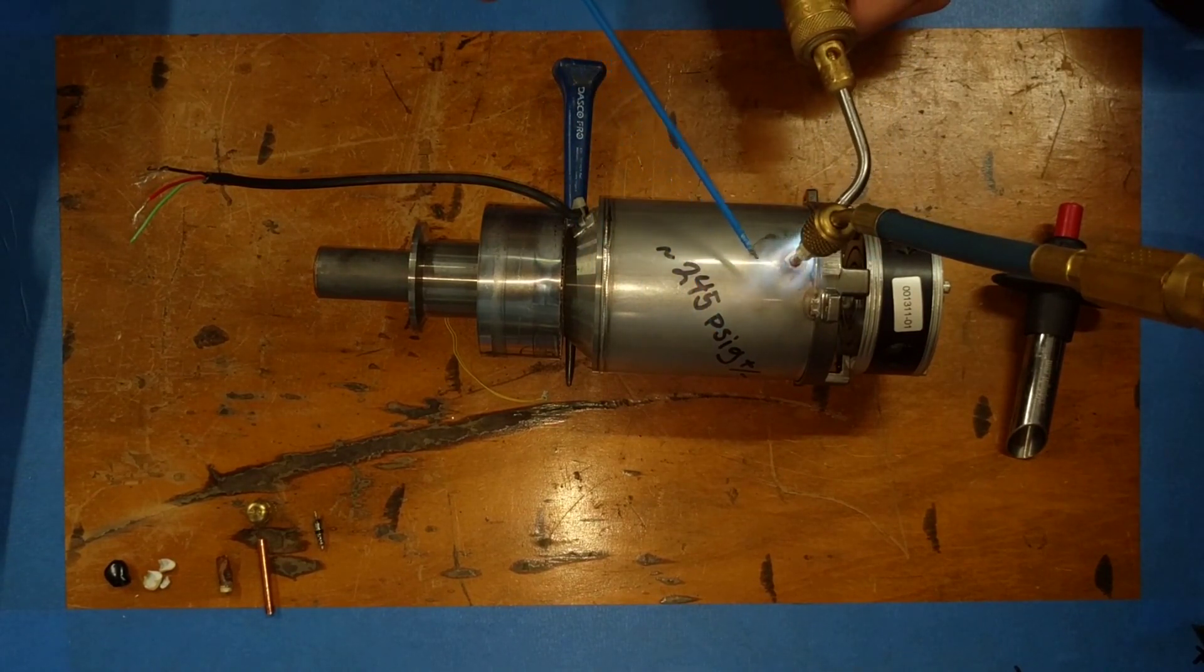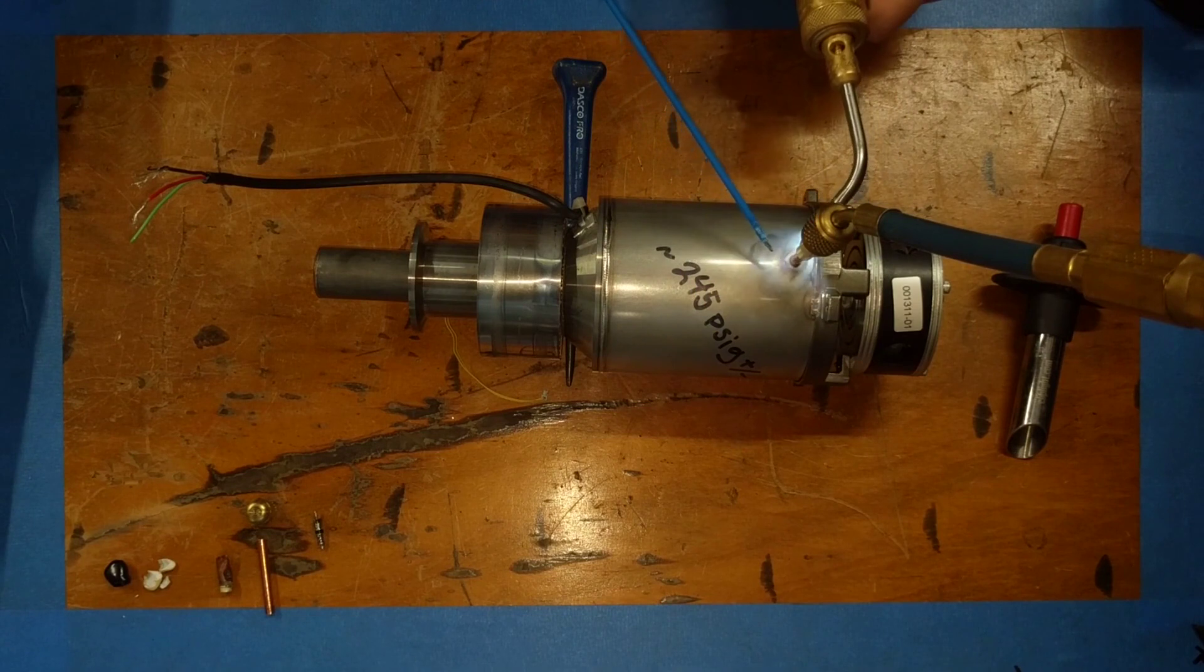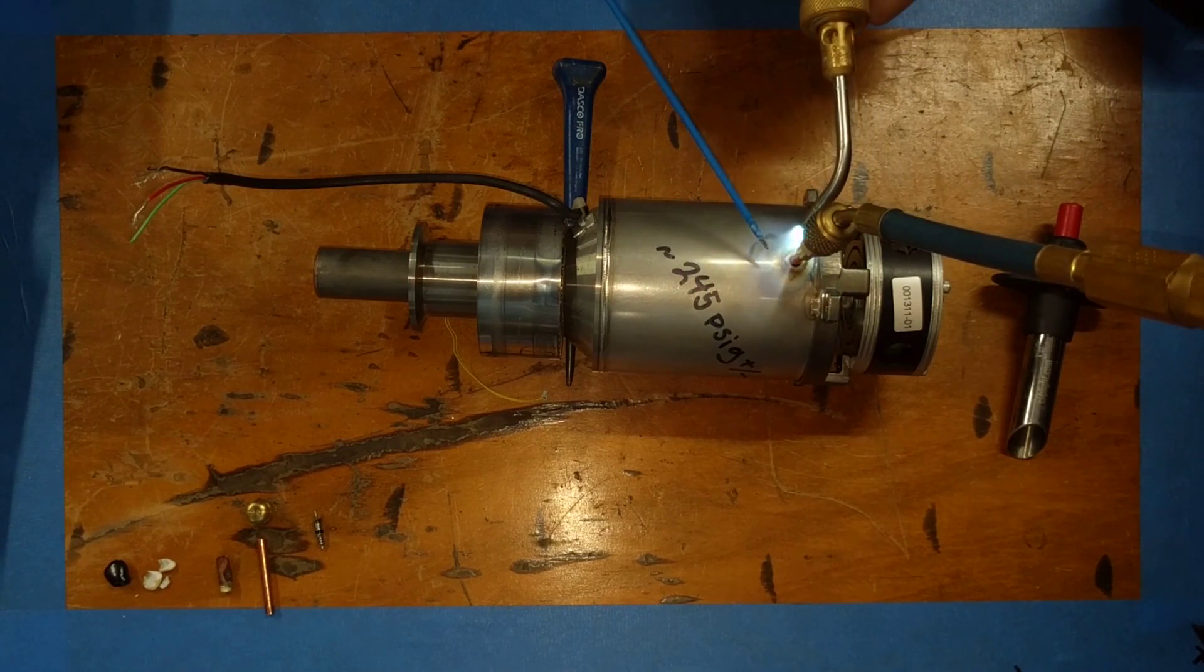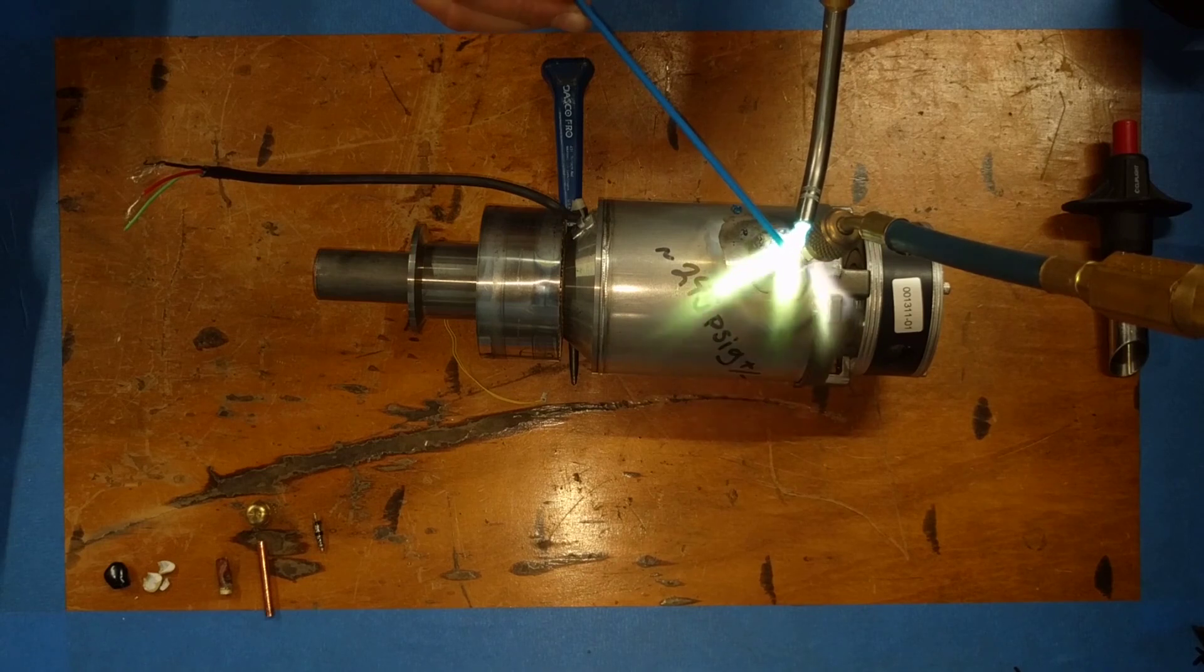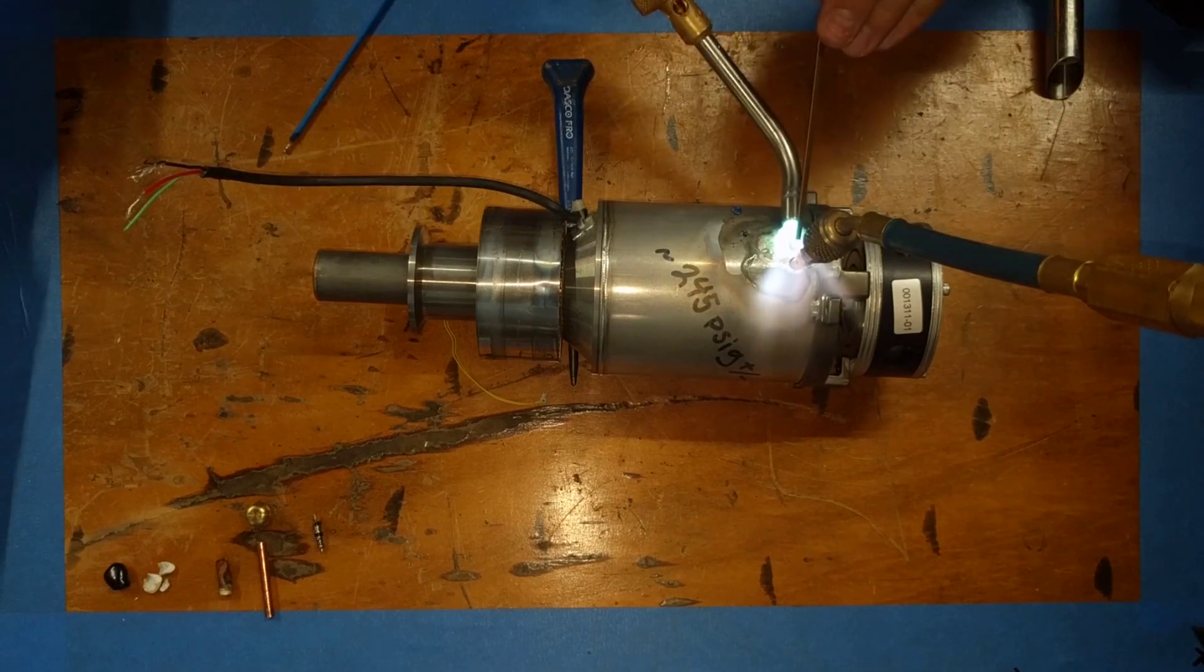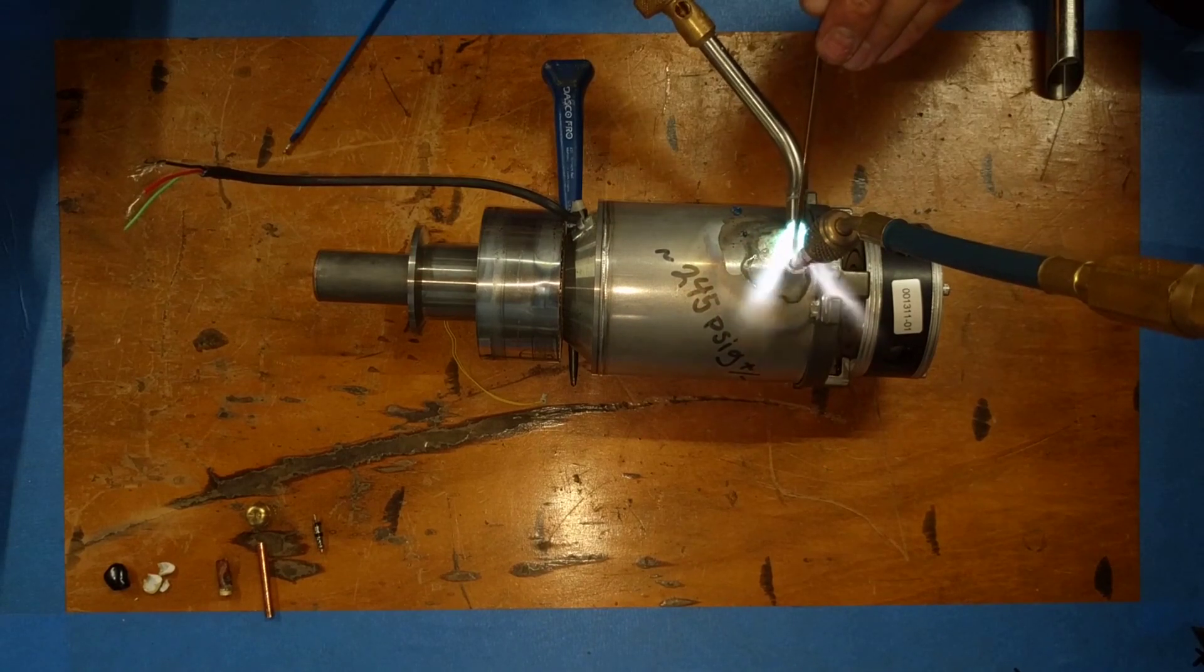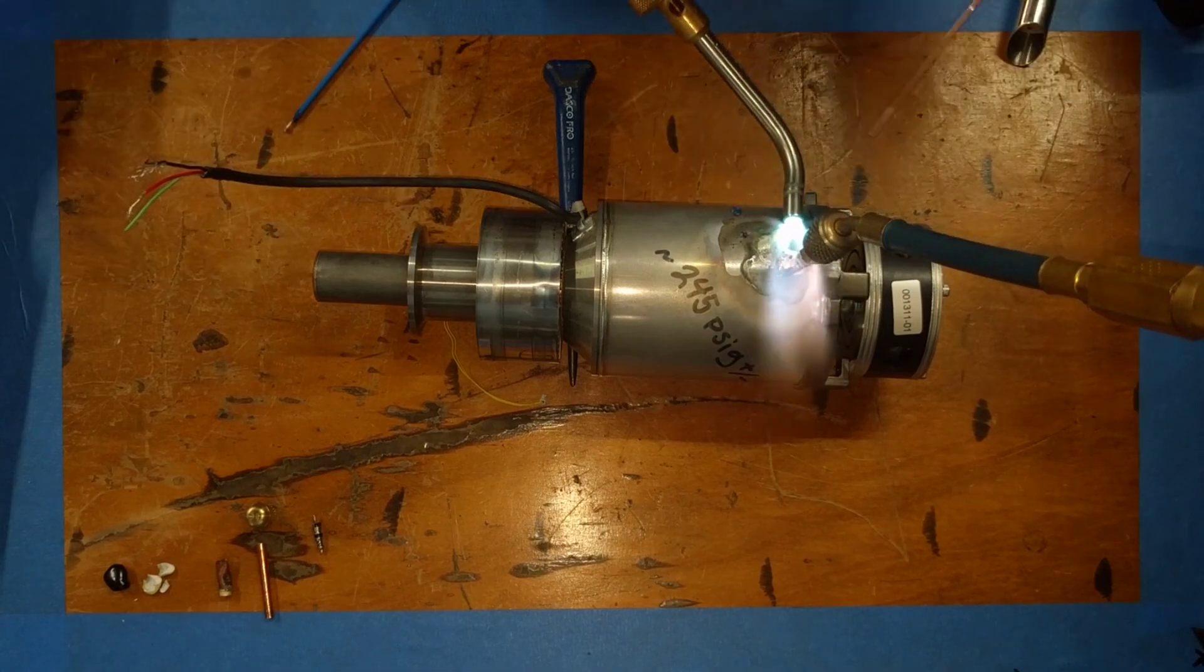I'm going to start using a small tip here and that 45 silver braising rod. Then I'm going to step it up to a bigger tip, and then finish it off with a 15% phosphate copper braising rod on the process stub there.